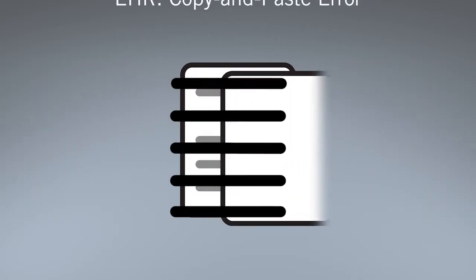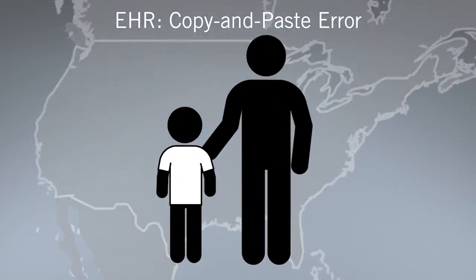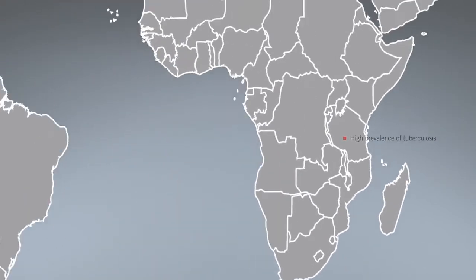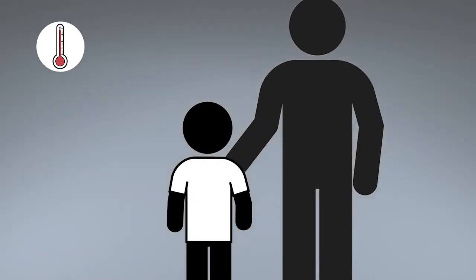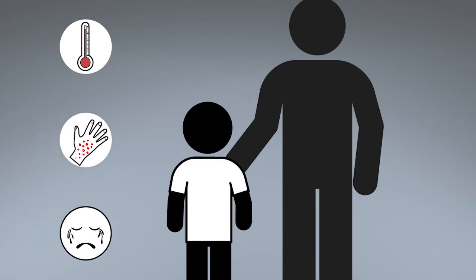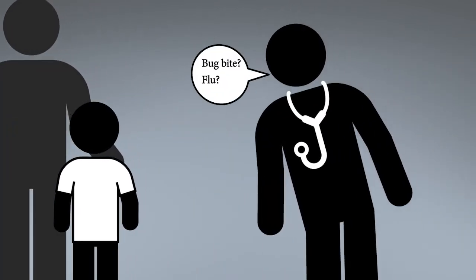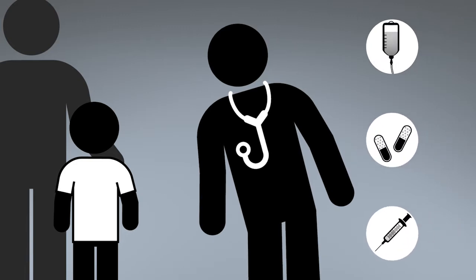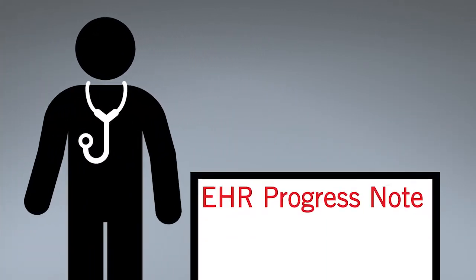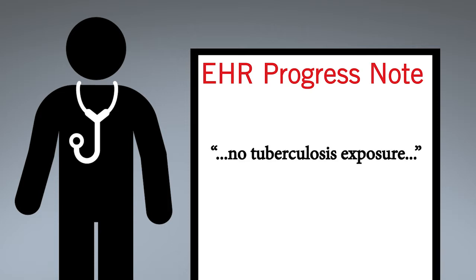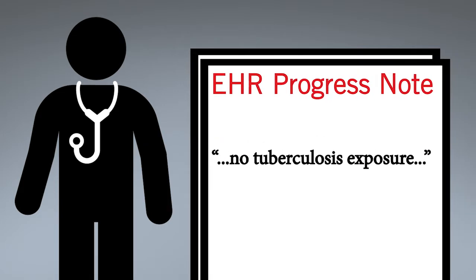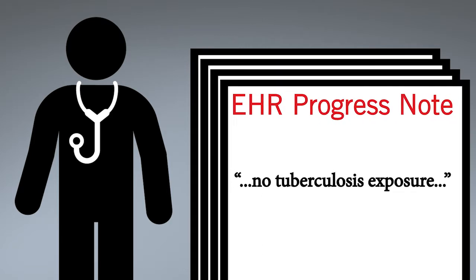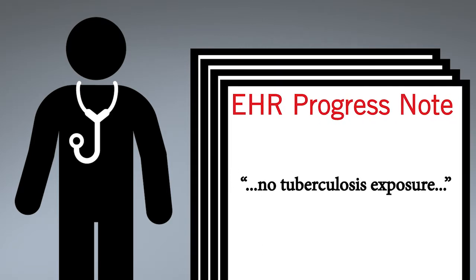This first example involves a copy-and-paste error. A toddler was taken to a country where tuberculosis was prevalent. After the trip, he presented with fever, rash, and fussiness. The physician considered bug bite or flu and treated the child with fluids, antibiotics, and flu meds. His office EHR progress note indicated there was no tuberculosis exposure. The physician copied and pasted this information during subsequent office visits with no revision to note travel to a country with tuberculosis.